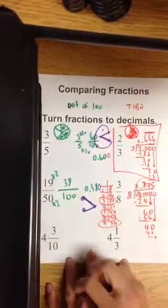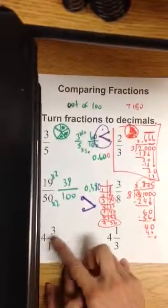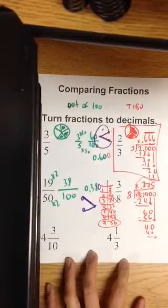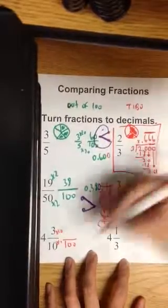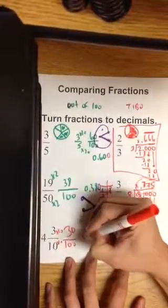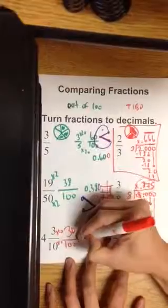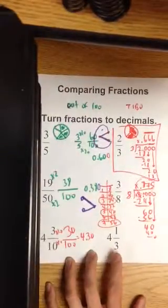And our last example are mixed numbers. So it's 4 and 3/10. So it's 4 point or 4 and something something. Can this go into 100? Yes, it can. You multiply by a scale factor of 10 and you get 30. So it's 4.30 for this one.